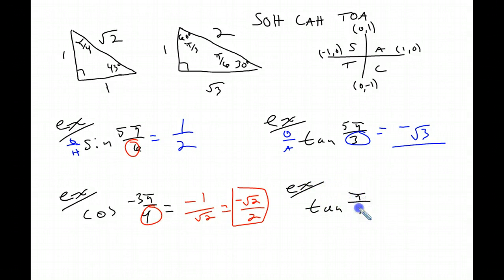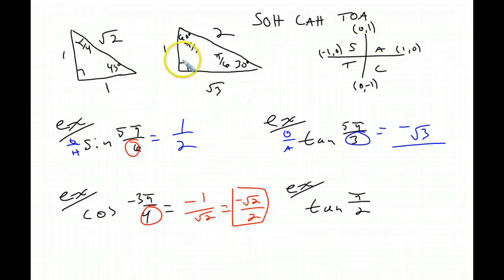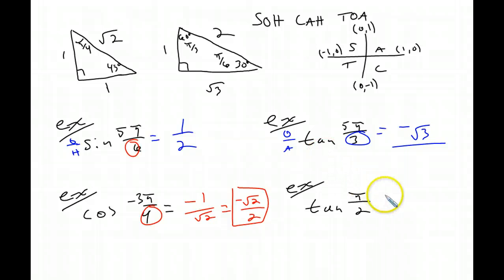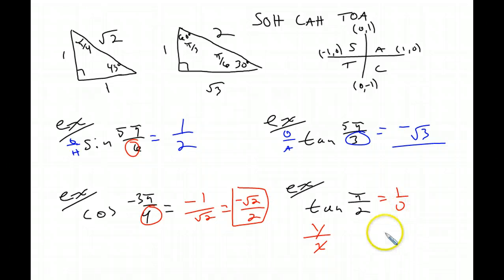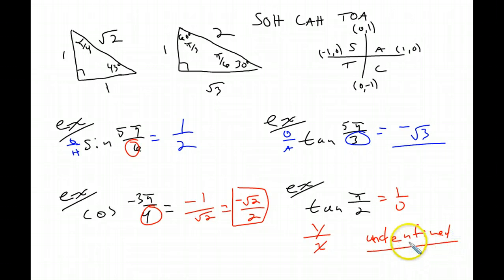For tangent(π/2): π/2 is straight up — it's not in either of our triangles. Since tangent is y over x, and at π/2 the coordinates give 1 over 0, and we cannot divide by zero, tangent(π/2) is undefined. For reference: cosine(π/2) equals zero, and sine(π/2) equals one.